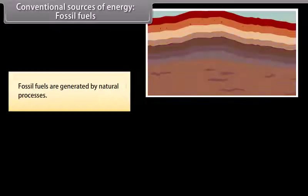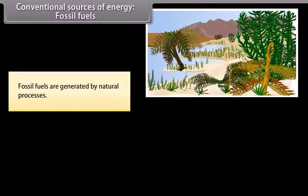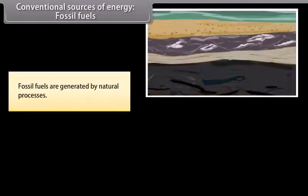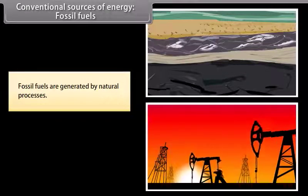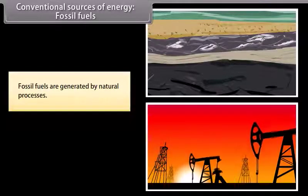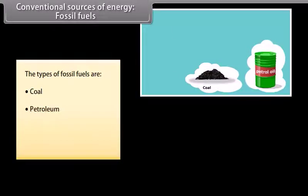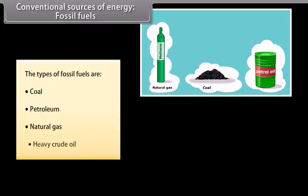Conventional sources of energy: Fossil fuels. Fossil fuels are generated by natural processes. They include a high percentage of carbon. These are non-renewable sources of energy as they take millions of years to form. The reserves of these fuels are reducing at an alarming rate. The types of fossil fuels are coal, petroleum, natural gas, and heavy crude oil.